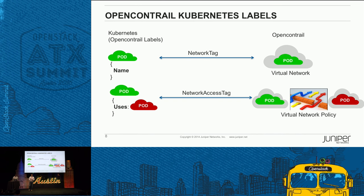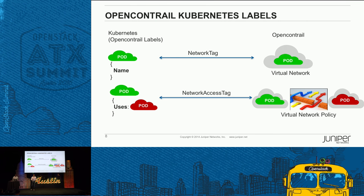Whenever you have a network tag, we create a virtual network out of it. Whenever we have a network access tag — say you have a service Redis offering network access for another entity — we would create a front-end and Redis network policy. As I mentioned, everything in Contrail is through network policies. So we create two virtual networks for each of the pods or services and automatically use the tag to create a policy between them. Fundamentally, you've moved from a flat structure to a completely policy-driven isolated structure — these pods cannot talk to each other by default.